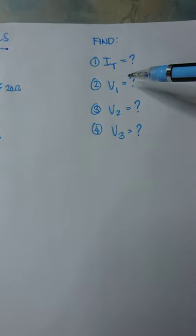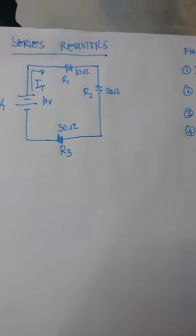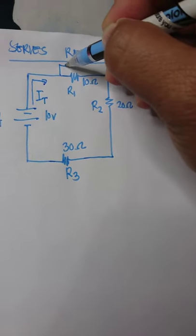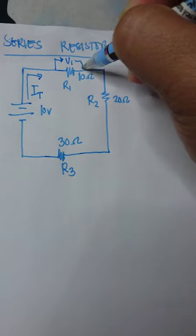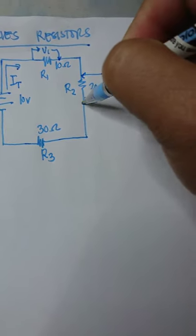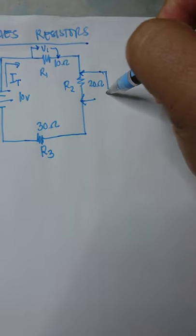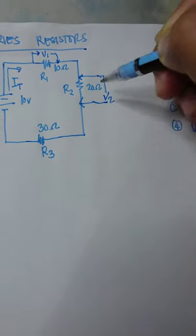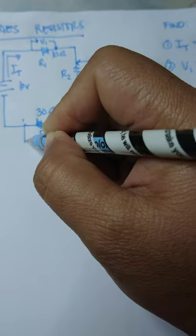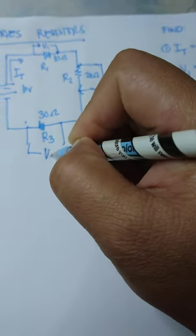How about V1, V2, and V3? It is the voltage drop across each resistor. Here we have V1, from here we have V2, then from R3 we have V3.